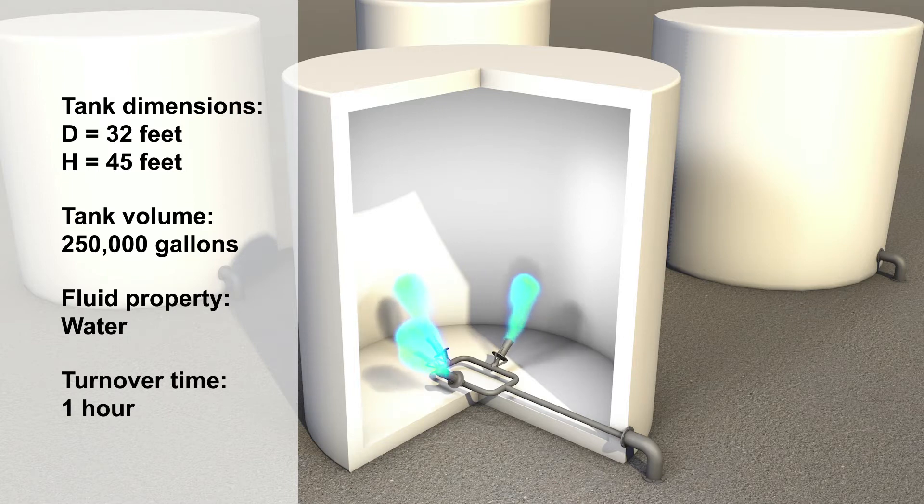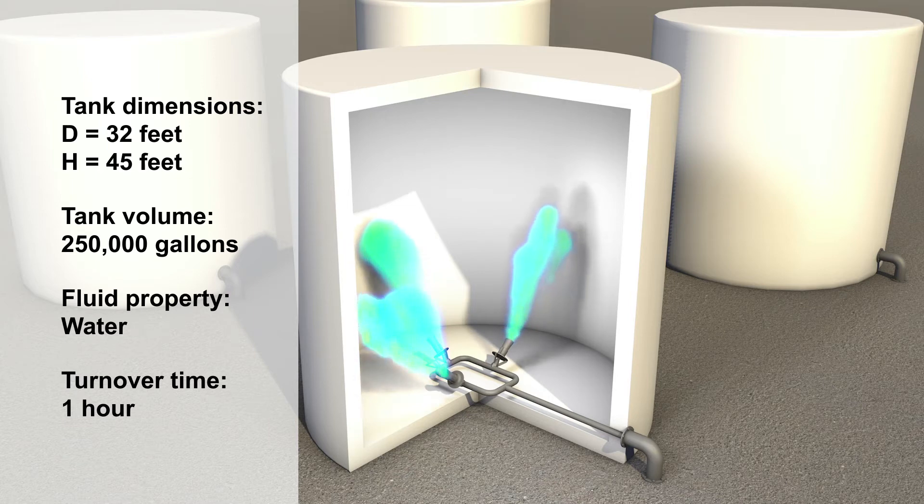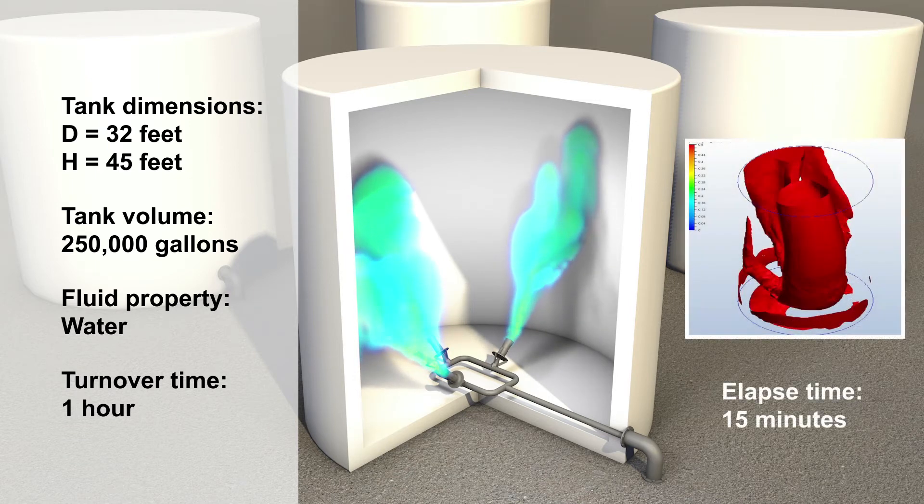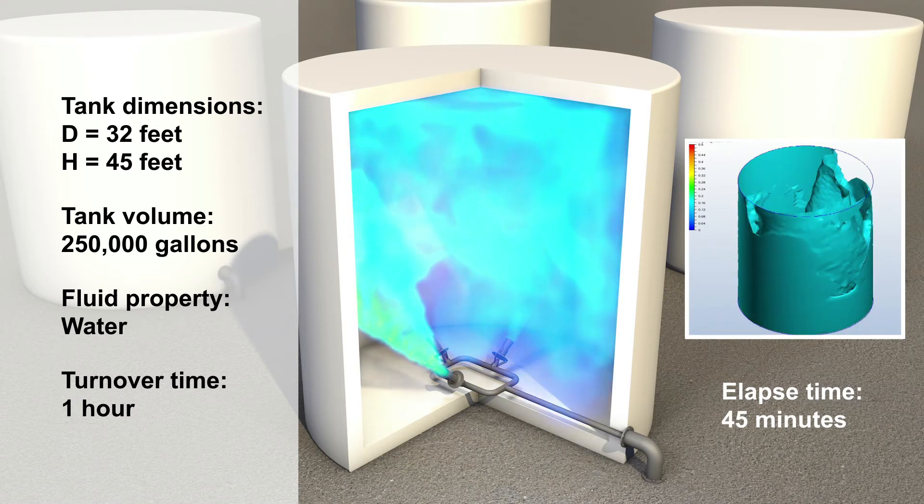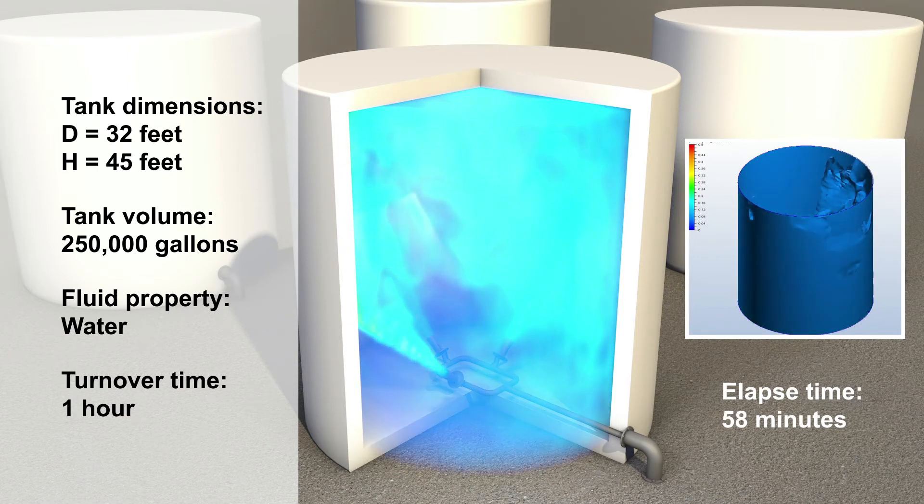The finished CFD analysis shows the average velocity flow growing in the tank. These are the results after 15 minutes, 30 minutes, 45 minutes, and finally at full blend, 58 minutes.